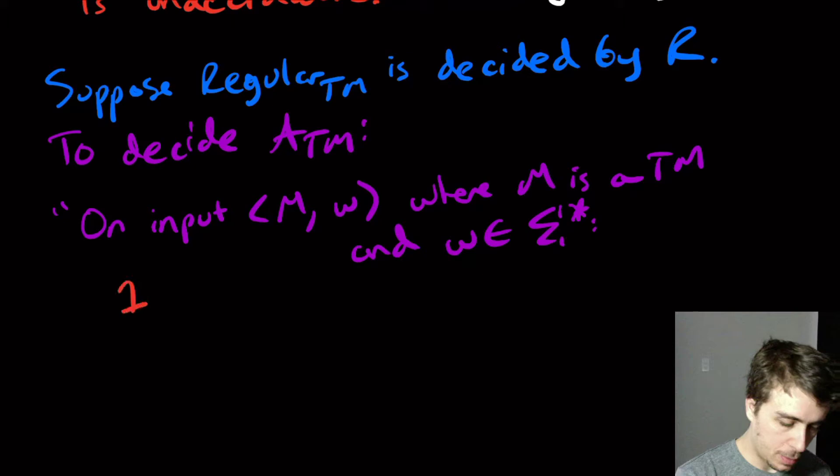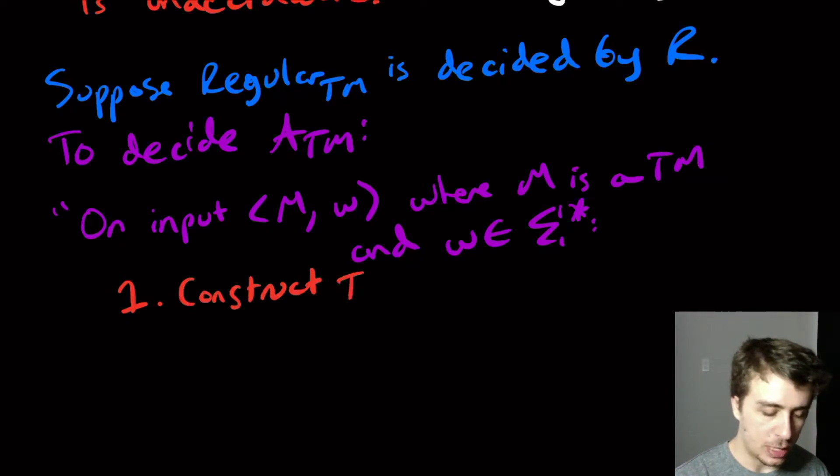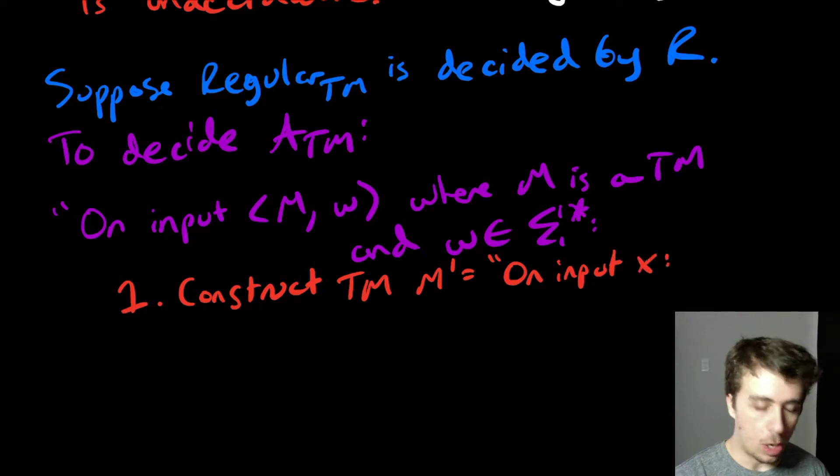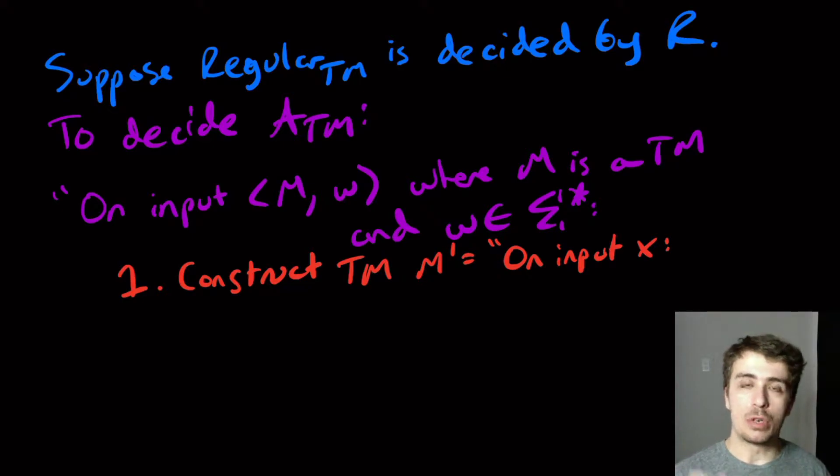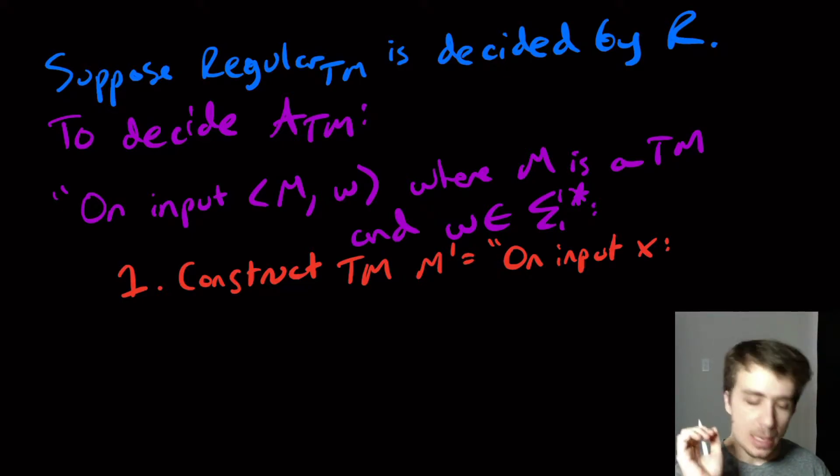The first trick is to construct M prime, which takes some arbitrary input X. We're going to have the language be not regular at the start. And if M accepts W, then we'll make M prime's language regular. Our favorite non-regular language is 0^n 1^n.